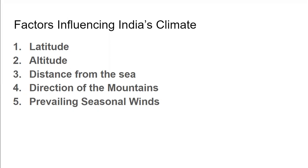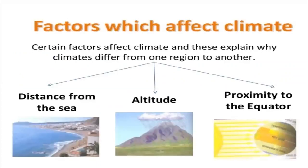The factors influencing India's climate are latitude, altitude, distance from the sea, direction of the mountains, and prevailing seasonal winds. Such factors affect climate and explain why climates differ from one region to another. The distance from the sea, altitude, and proximity to the equator are key among these.